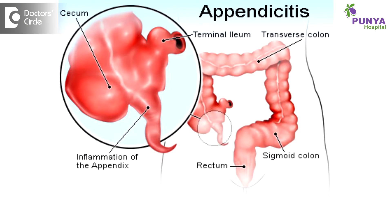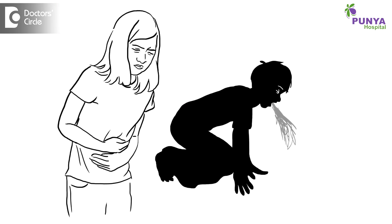A child having appendicitis — appendicitis is an infective condition wherein, if it is a child over about 8-10 years or 15 years, the child will usually present with pain abdomen, vomiting, and fever. These are called the cardinal symptoms of appendicitis.